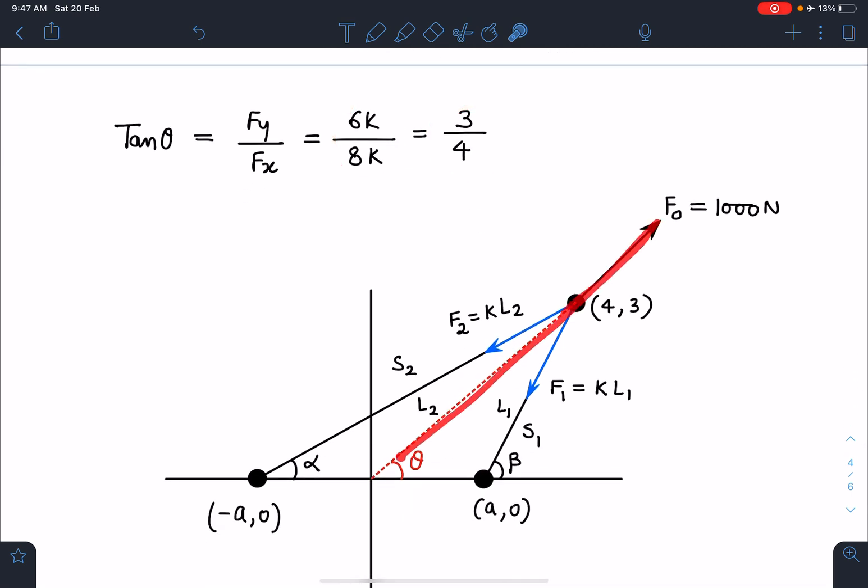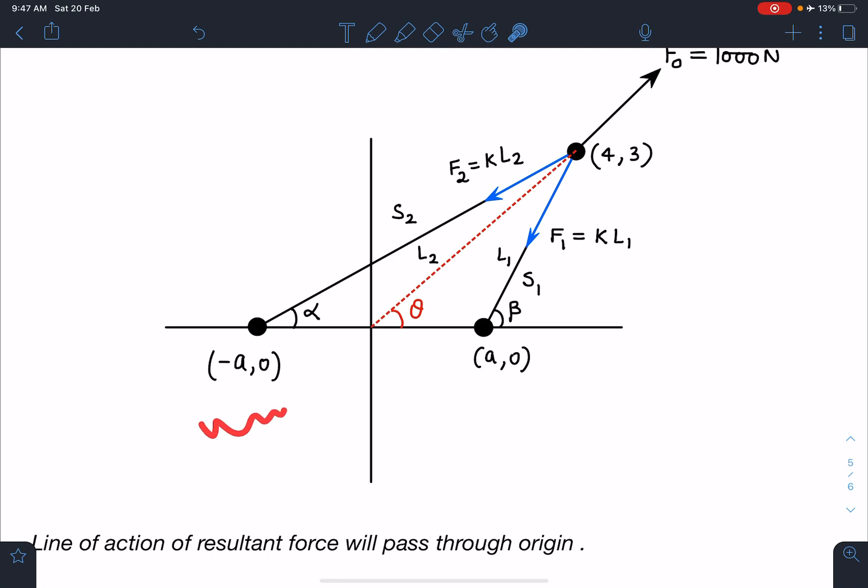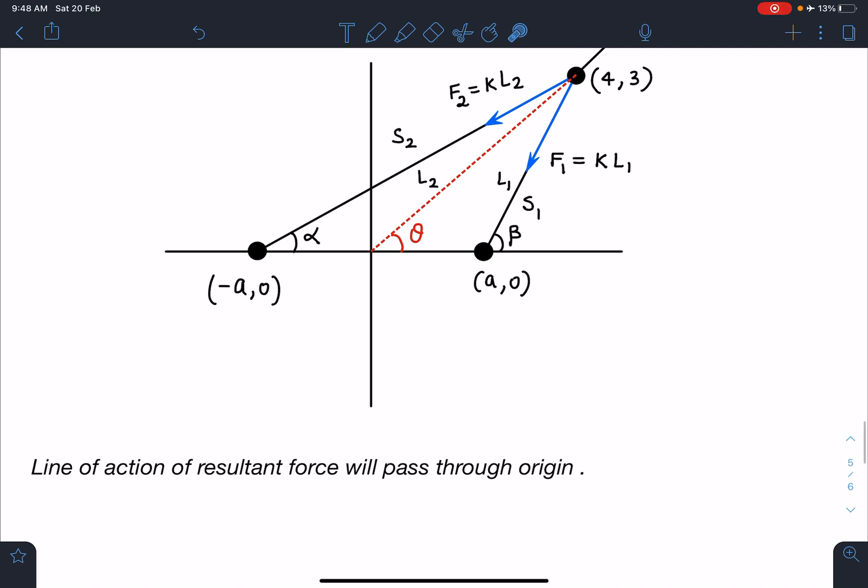One thing you'll notice is this force's line of action is actually passing through the origin. Your homework is you need to locate these points P1 and P2, that means you have to find a. You can solve this question using Lamy's theorem also. There are many ways this question can be approached.